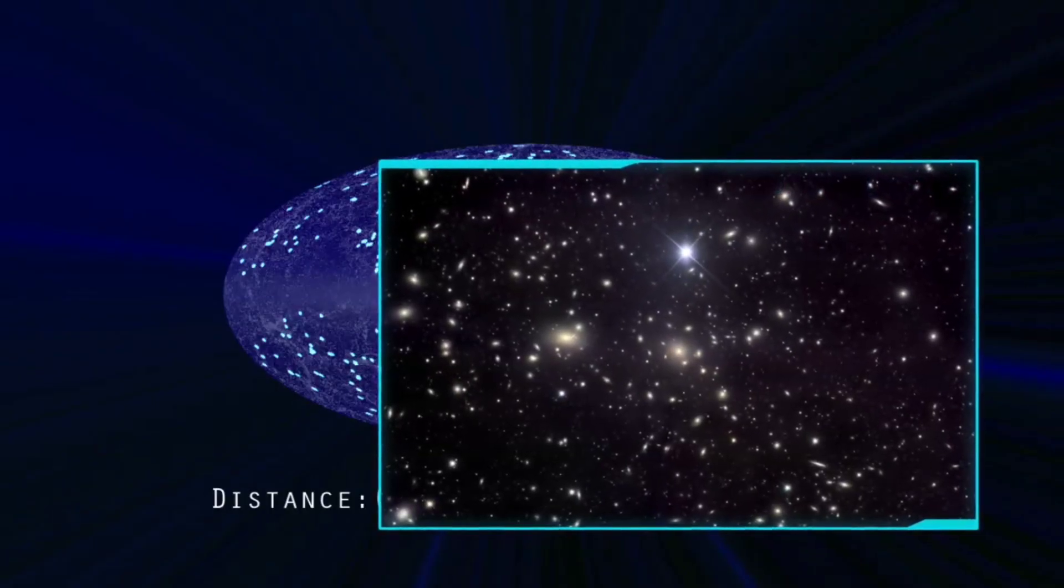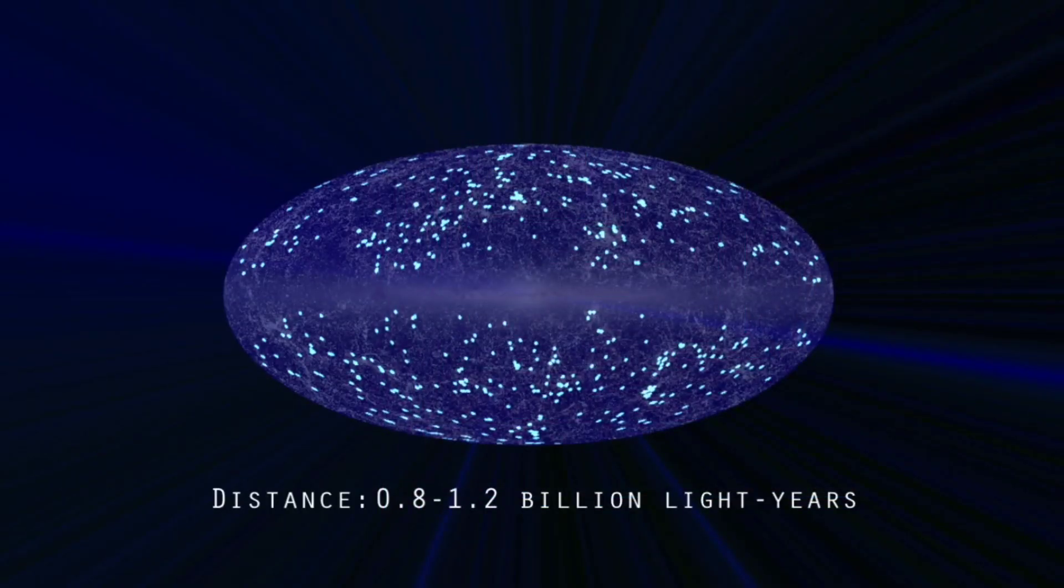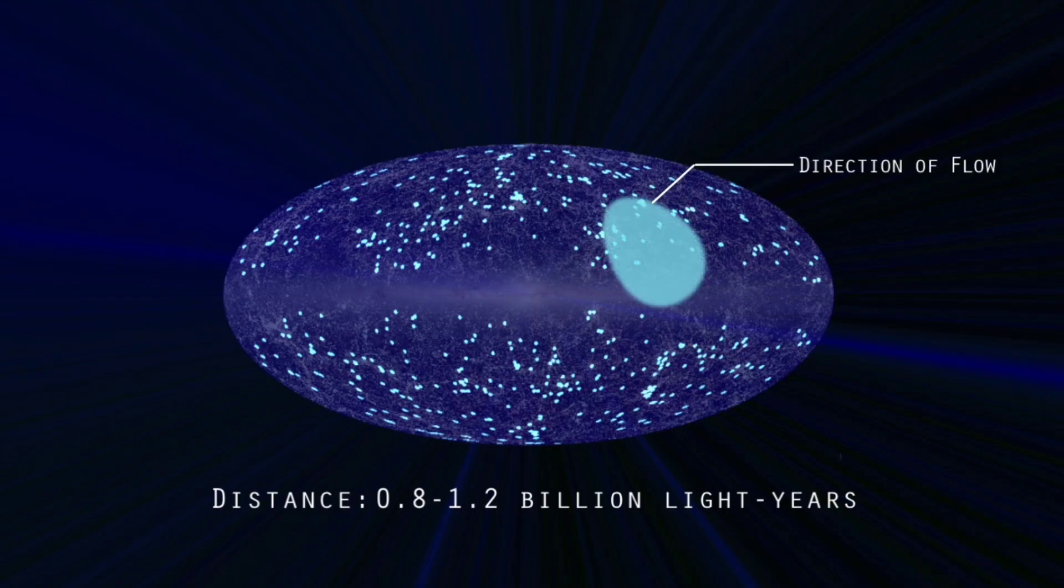But then the movement of some colossal galaxy clusters that were originally thought to have been affected by the Great Attractor were discovered to be racing towards a slightly different area of space, and this time there was no apparent reason for their motion.